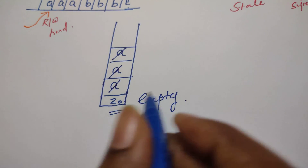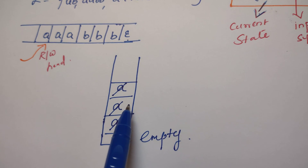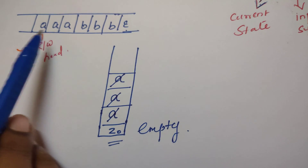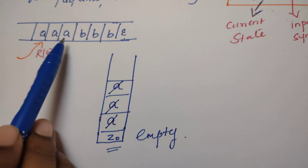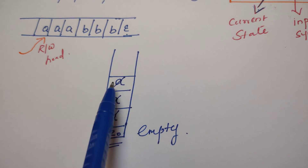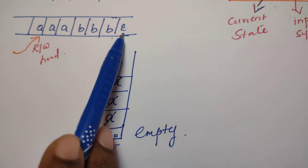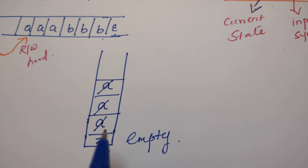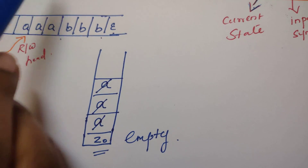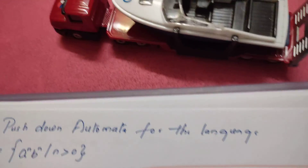Whenever it reads 'a', the pushdown automata wants to remember the count of a's so it can later check whether it matches the count of b's. To remember the count of a's, whenever it reads 'a' it pushes one symbol onto the stack. Once it starts reading b's, it pops the symbol out of the stack. After reading all b's, once it reaches the end of the string, the stack must also go empty — only then can the PDA accept the string.